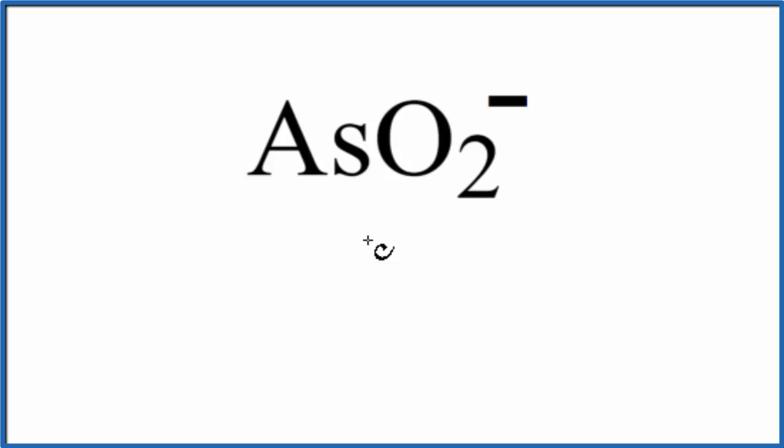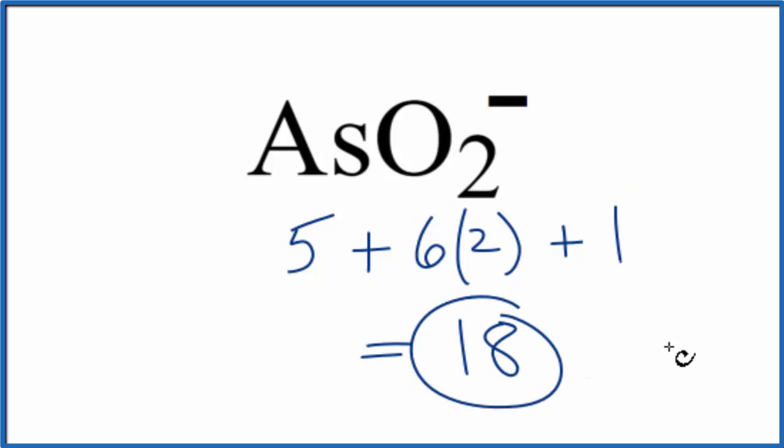So As, arsenic, that's in group 15, sometimes called 5A, 5 valence electrons. Oxygen group 16, also called 6A, 6 valence electrons. We have two oxygen atoms. This negative sign tells us we have an extra electron. So we have one more electron. So 5 plus 12, 17 plus 1, 18 total valence electrons for the AsO2 Lewis structure.